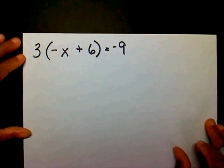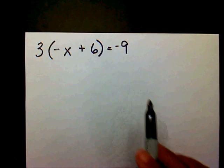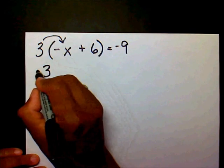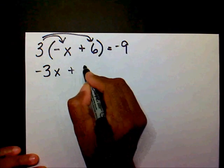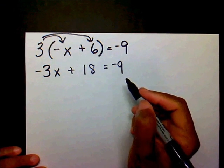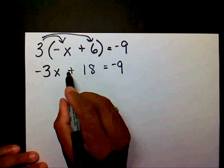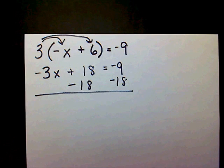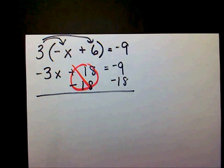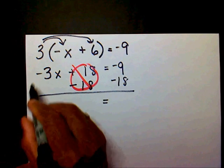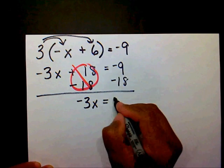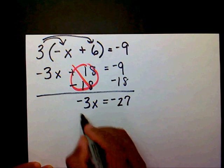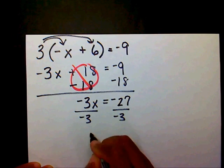The last one we're going to work today is 3 times negative x plus 6 equals negative 9. Then apply the distributive property. 3 times negative x is negative 3x, 3 times 6 is 18 equals negative 9. I want to move my constant. This is a plus 18, so I'm going to subtract 18. My 18s are going to cancel. That's going to leave me with negative 3x on my left and negative 9 minus 18 is negative 27. I'm going to divide both sides by negative 3, so x equals 9.